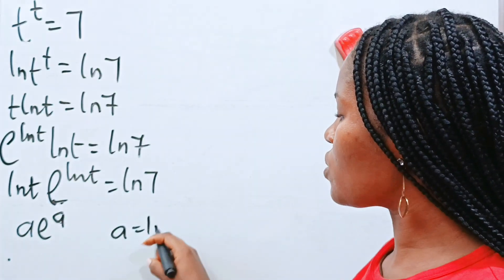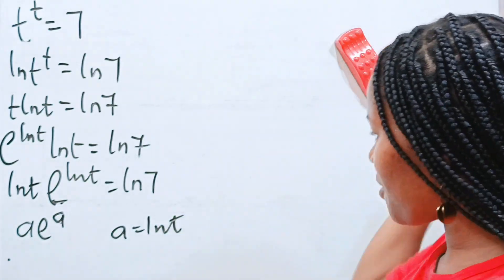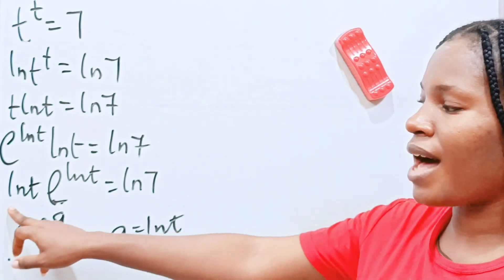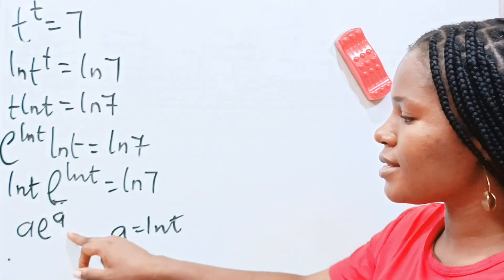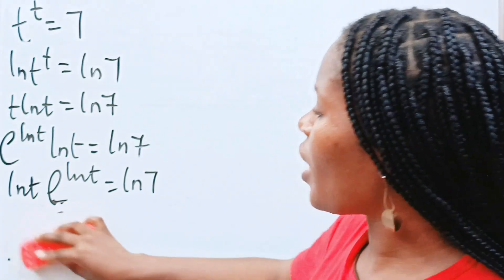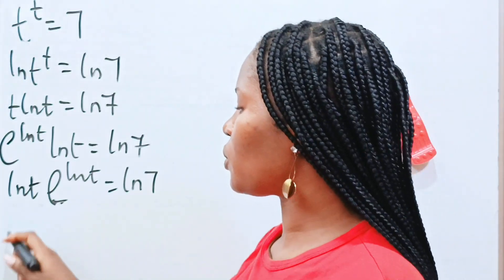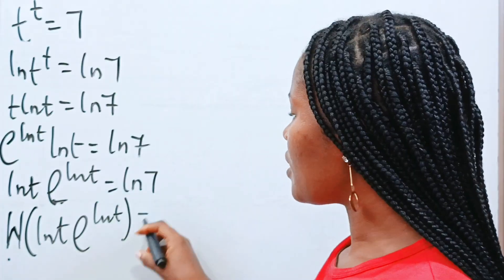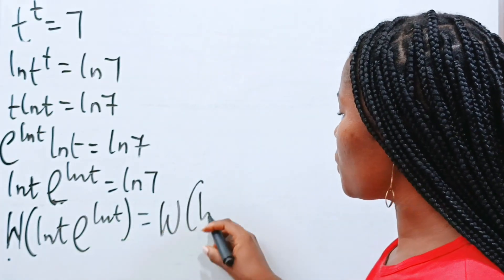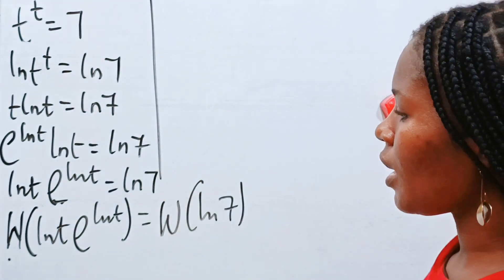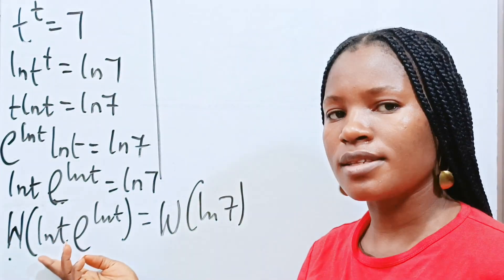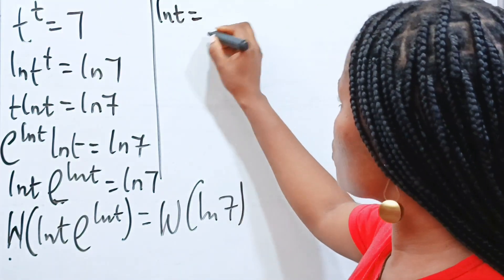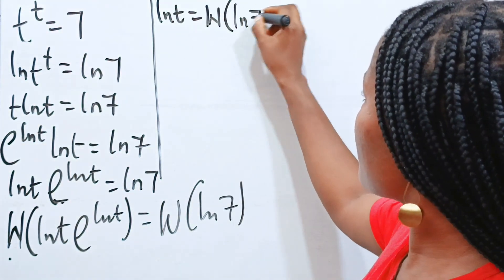Our a is equal to ln t. So we can now apply the Lambert W function. If we apply the Lambert W function to ln t times e to the power of ln t equals ln 7, we apply Lambert W to both sides. We get ln t is equal to the Lambert W function of ln 7.